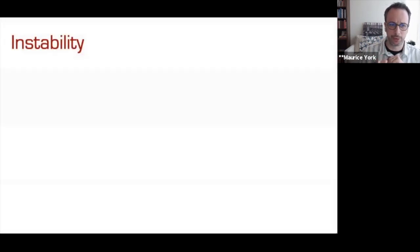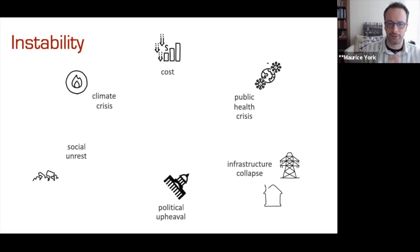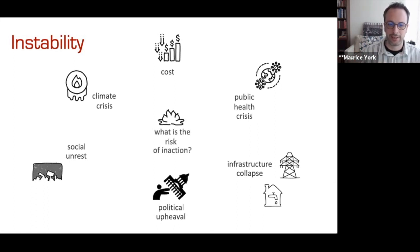Once we take up the question of the barriers to collaboration, what are those that are inherent in the academy? I pointed to this earlier, you've seen the slide, but the instabilities that we face in our broader environment. So there's not just the barriers in the academy, but they're all around us. Things like cost, the climate crisis, the public health crisis. Incredibly encouraging this week in some instances, and in others incredibly disheartening, like the outbreak in India. Things like infrastructure collapse, social unrest, and political upheaval, all of these are around us.